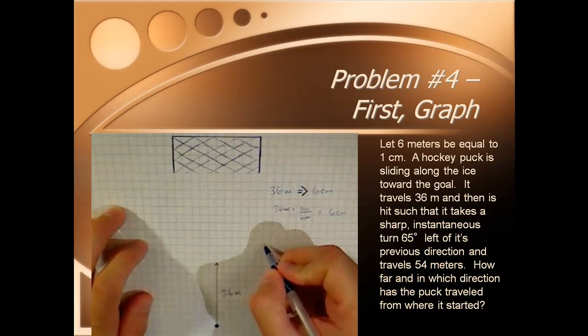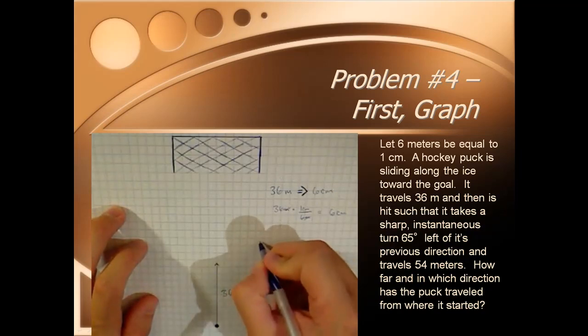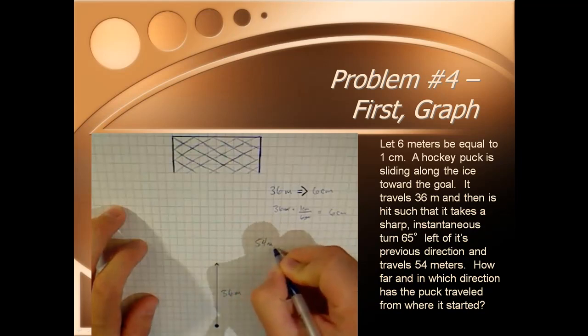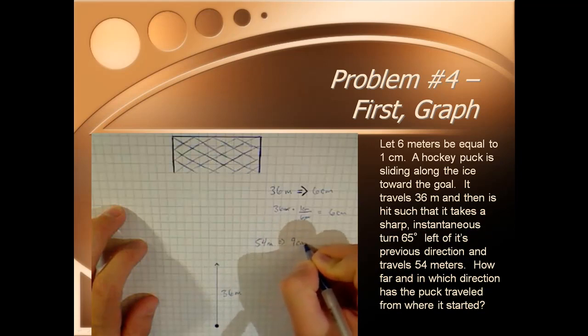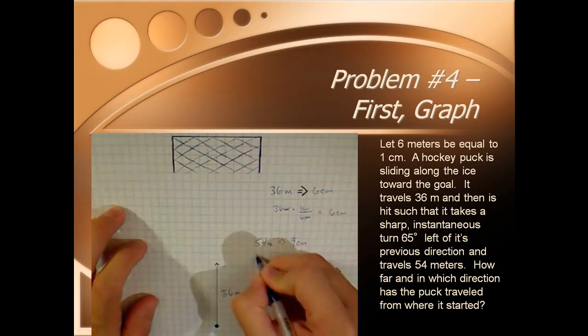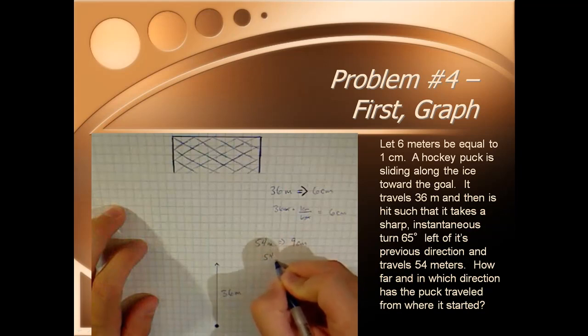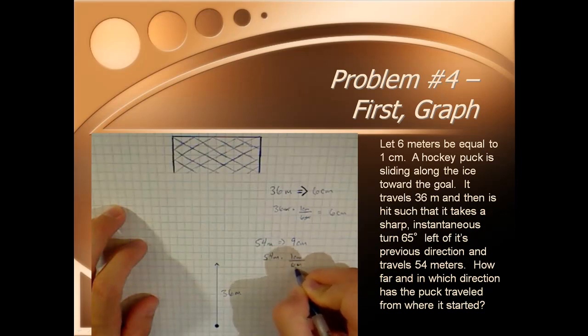For the next part, we need to go ahead and show the 54 meters. That's going to convert into 9 centimeters. Remember that's because 54 meters times the conversion factor, meters cancel. 54 divided by 6 is 9, and then the centimeters that's left over.